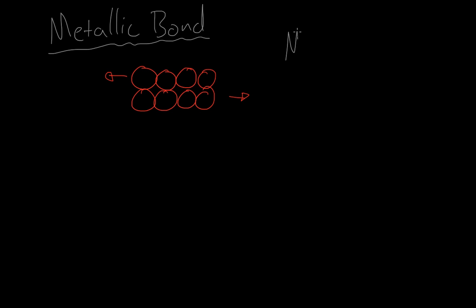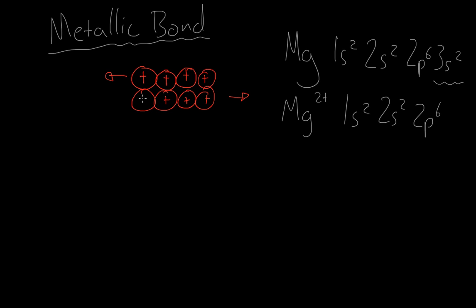Well, let's look at the electron configuration of magnesium. Magnesium's electron configuration is 1s2, 2s2, 2p6, 3s2. And what essentially happens is when this comes in contact with other magnesium atoms, it shares its two electrons with the other magnesium atoms and becomes Mg2+, with an electron configuration of 1s2, 2s2, 2p6. It's effectively been ionized. So looking at this diagram again, all of these atoms are actually positive ions. But wouldn't that mean that all of these ions would repel each other and the whole structure would fall apart? Well, no.